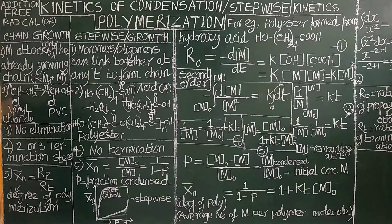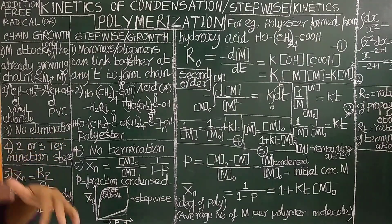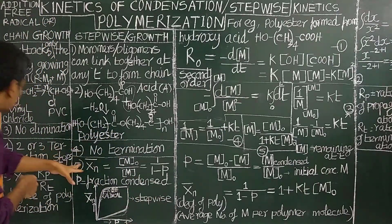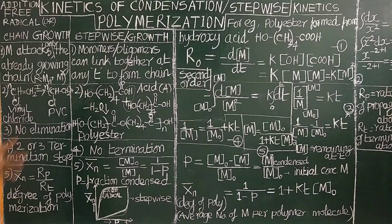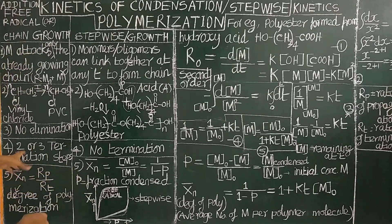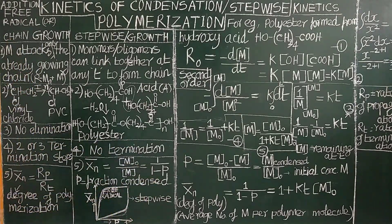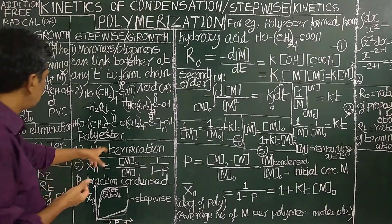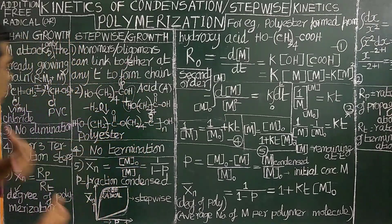In free-radical addition polymerization we studied there are two to three termination steps: one is radical coupling, another is disproportionation, and another is radical transfer by external addition. Whereas in condensation polymerization there is no termination step.